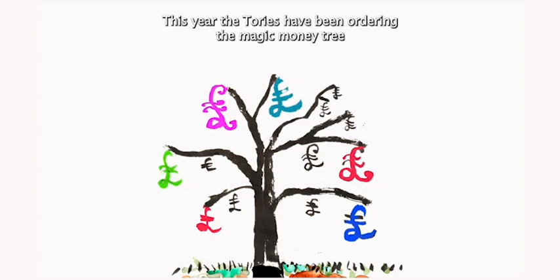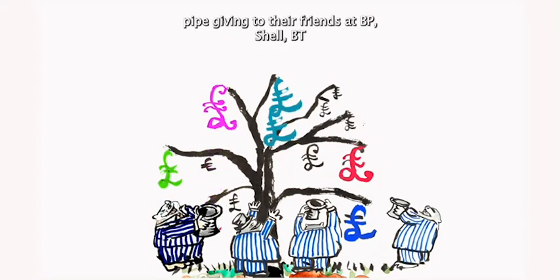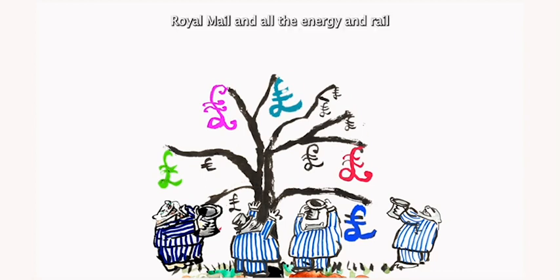This year the Tories have been ordering the magic money tree to pay billions to their friends at BP, Shell, BT, Royal Mail and all the energy and rail companies.